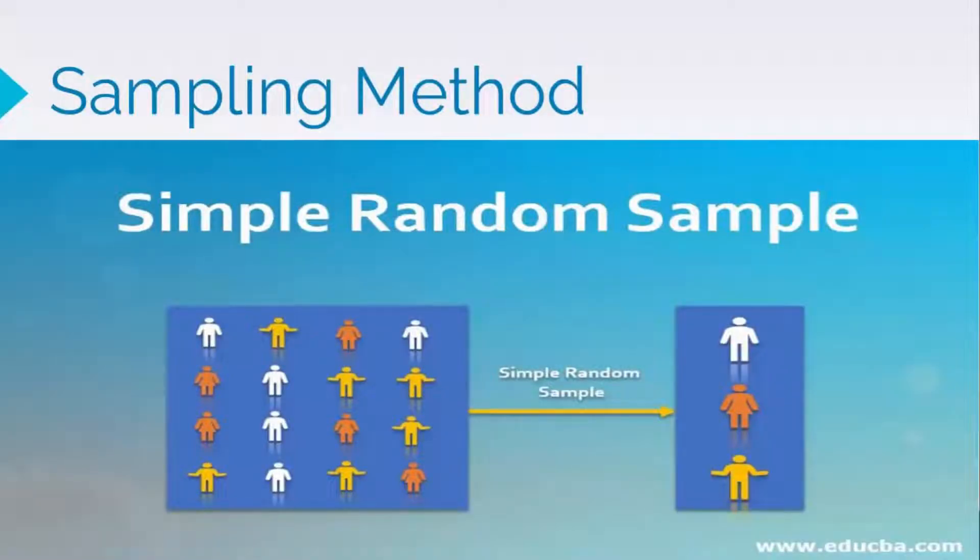Sampling methods. Simple random sampling is the process of selecting a sample from a set of all sampling units or a population such that each sampling unit is given a chance of being included in the sample. In doing this, we obtain a simple random sample that is representative of the population and not biased in any way.